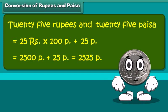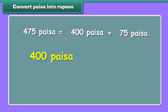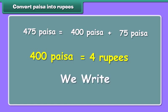It's time to convert paisa into rupees. 475 paisa is equal to 400 paisa plus 75 paisa. As we know, 400 paisa is equal to 4 rupees. Therefore, we can write it as 4 rupees and 75 paisa.